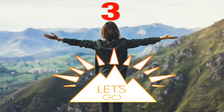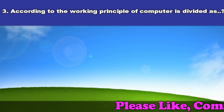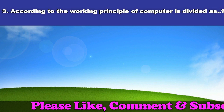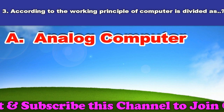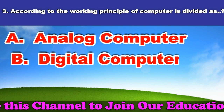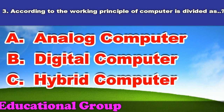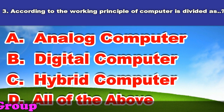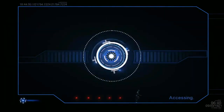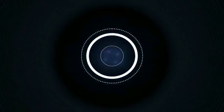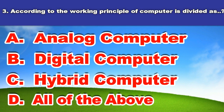Third question: According to working principle, a computer is divided as. A. Analog computer. B. Digital computer. C. Hybrid computer. D. All of the above. And the answer is all of the above.